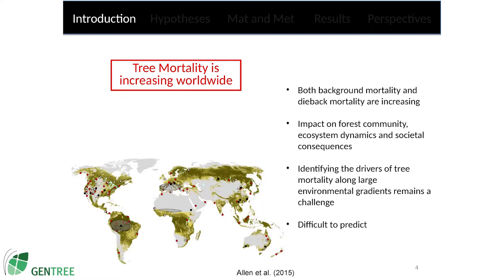I'm going to tell you about two types of mortality. Background mortality, also called regular mortality, is the mortality that happens in forest — the theoretical stable rate of mortality in the absence of catastrophic events. By opposition, you can find die-back mortality, which is an intense event of mortality as a response to catastrophic events such as heat waves, droughts, insect outbreaks, and things like that.